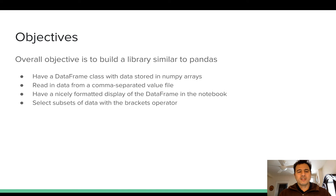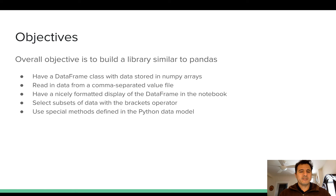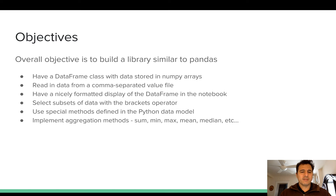Our DataFrame will be able to select subsets of data with just the brackets operator, which is a universal way of selecting subsets of data in Python. We will also define many special methods, covered in the Python data model — more details on that when we get there. Our DataFrame will implement all the basic aggregation methods such as sum, min, max, mean, and median. Aggregation methods are those that return a single value — they summarize a sequence of values with a single number.